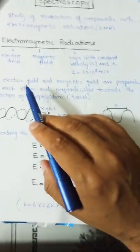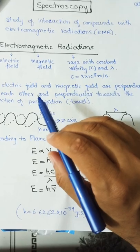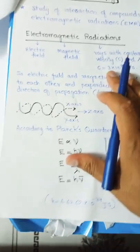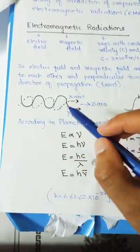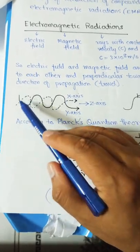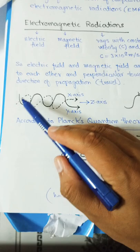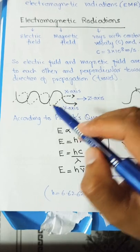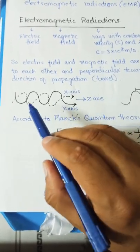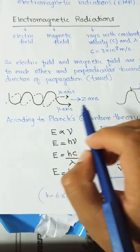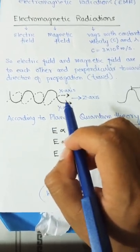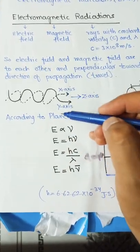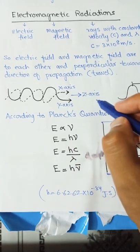Both the electric field and magnetic field are perpendicular to each other and perpendicular to the direction of propagation. As shown in the diagram, if the electric field is on the x-axis and the magnetic field is on the y-axis, they are at 90 degrees to each other, and both travel with their direction of propagation along the z-axis.